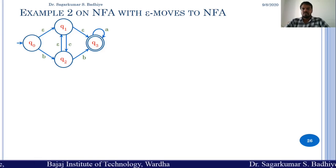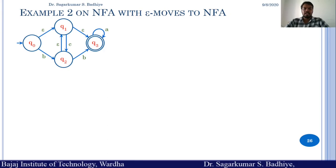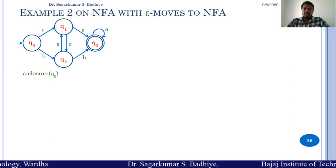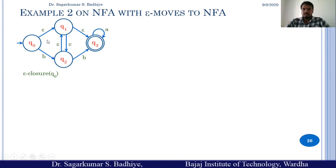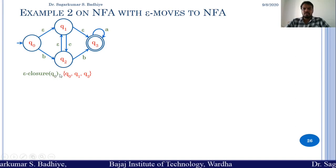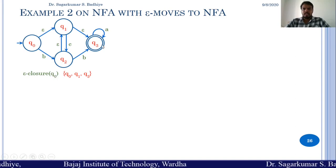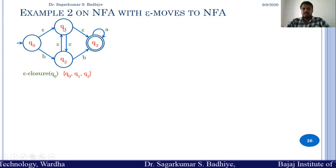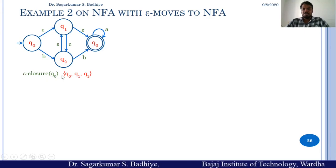The first step is to find the epsilon closure for all the states of the automata. Epsilon closure of Q0 consists of all the states that are reachable from Q0 by reading epsilon. It consists of Q0, then Q0 to Q1 and Q3. So epsilon closure of Q0 is Q0, Q1, and Q3, as from Q0 to Q1 there is an epsilon transition and from Q1 to Q3 there is again an epsilon transition.